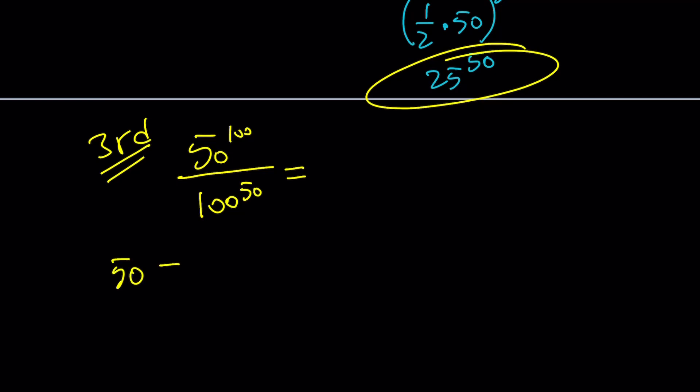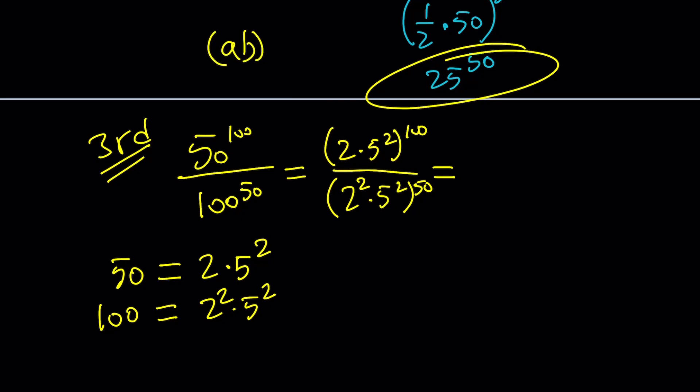50 can be written as 2 times 5 squared and 100 is 2 squared 5 squared because it's 10 squared. So if you replace 50 with 2 times 5 squared and raise it to the power 100, and for 100, replace it with 2 squared 5 squared and raise it to the power 50, and then raise the powers to the powers. We're using another property, AB to the N. Remember that, A to the N, B to the N. This will be 2 to the 100, 5 to the 200 divided by 2 to the 100 times 5 to the 100.